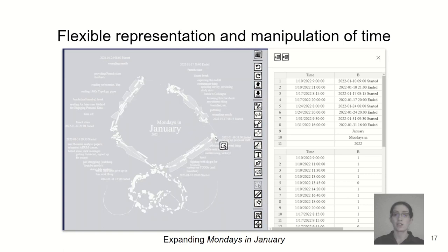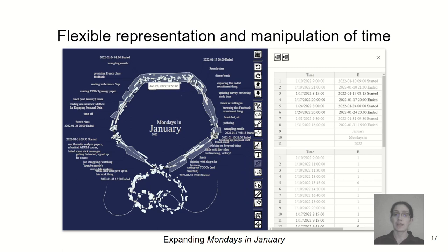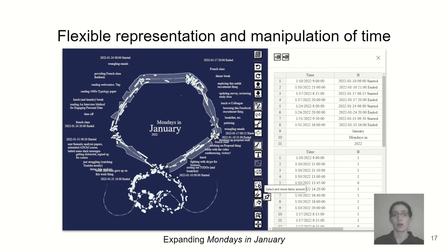To control the flow of time, Timesplines introduces the concept of time pins. Pins fix dates to certain points on the lines and can be moved to change the passage of time, or removed to return time passage to a constant rate.